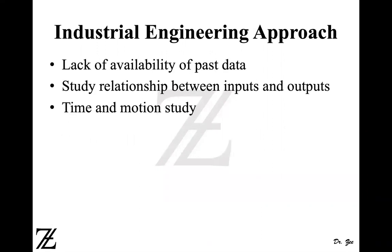Industrial engineering approach. In the industrial engineering approach, we use time and motion studies. We use input-output relationship. The reason is that we may not have past data available. Either it's a brand new product that we are producing, or we have made significant changes in the product that the data from the past is not reliable. So we need new information. We use industrial engineers who have a business background to estimate the cost of the product.